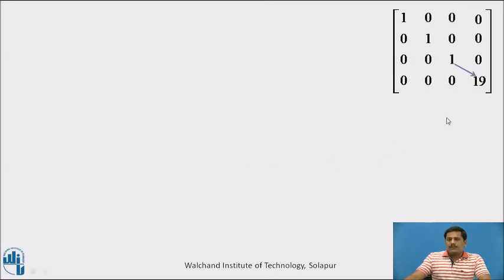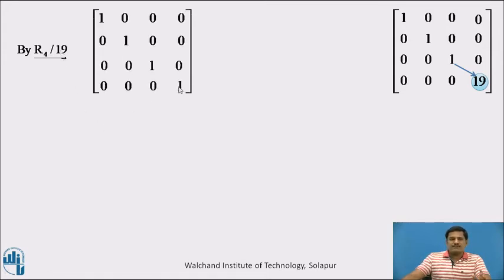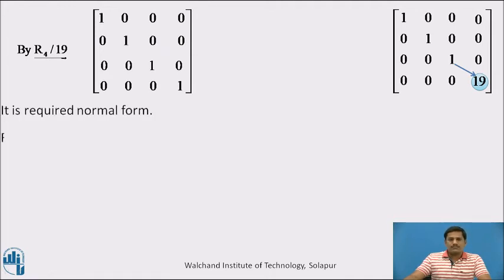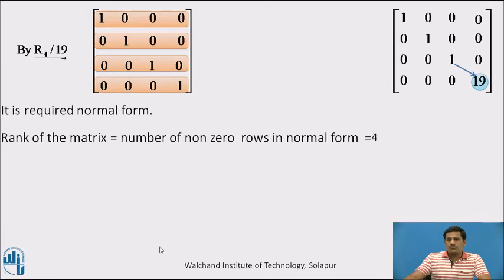Finally we move to the last diagonal element which is 19. We divide row number 4 by 19 so that we get this last entry as 1. There are no more diagonals, so this is our required normal form of the given matrix. The rank of the matrix is the number of nonzero rows in the normal form. Here we count 4 nonzero rows, therefore the rank of the matrix is 4.